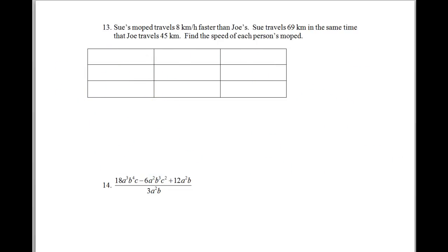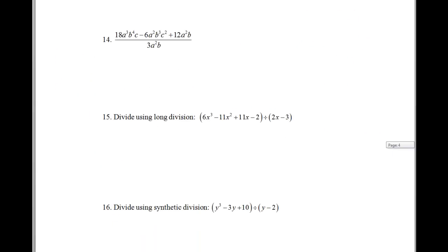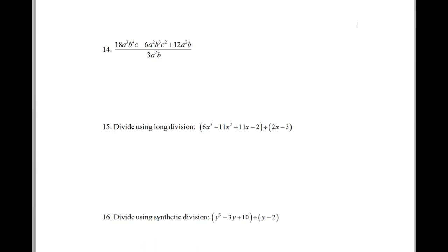Back to some of the just strict computational work. We're going to take a look at problem 14. This is a division problem. But you'll notice that this division problem is just dividing by a monomial. So the easiest way to do that is to take my 3a squared b.